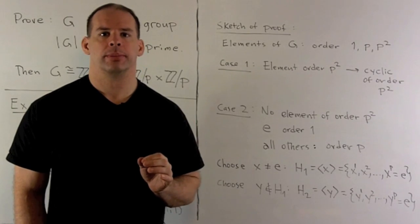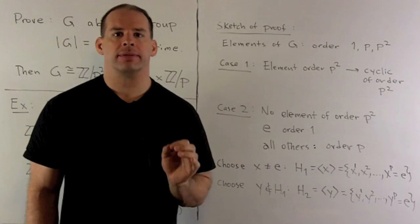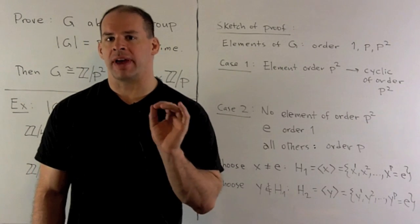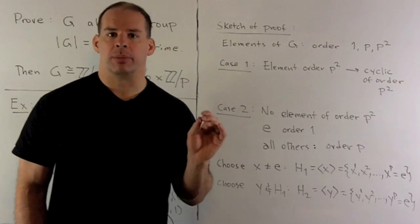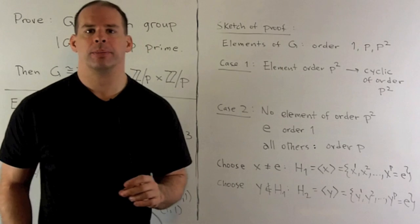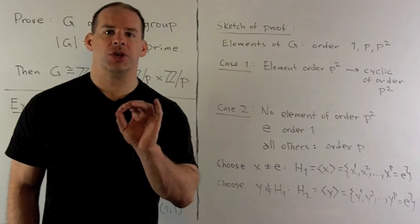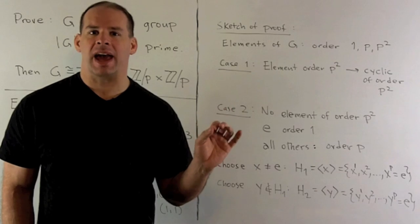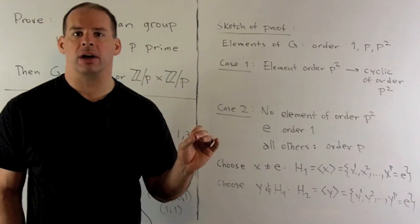Let's do our proof. Now to start off, our group is order p squared. So orders of elements in the group have to divide the order of the group. So the possibilities are 1, p, or p squared. If it turns out there's an element of order p squared, then we're looking at cyclic group of order p squared, and we're done.